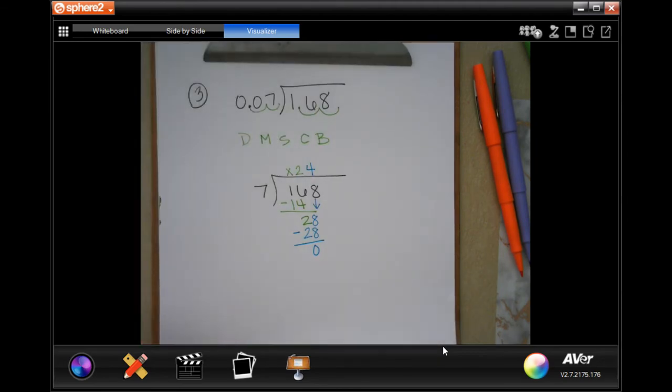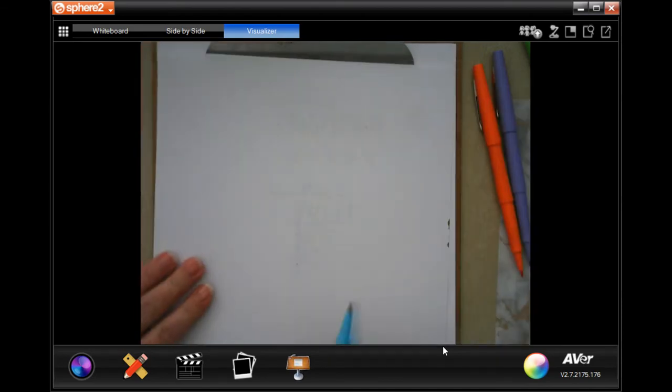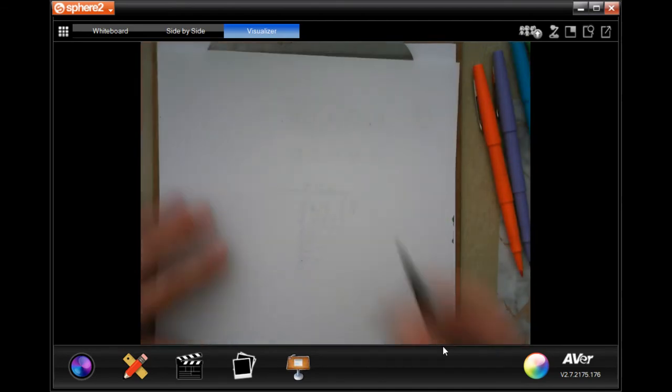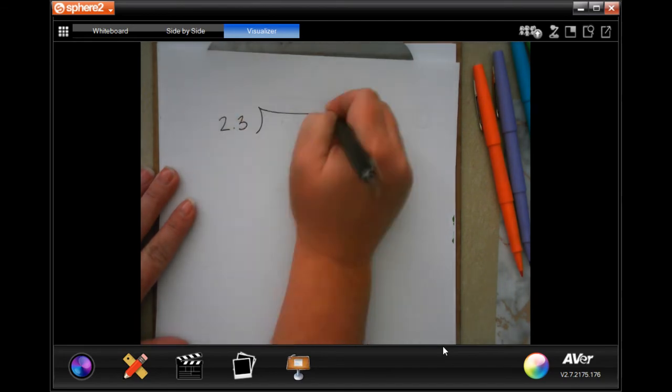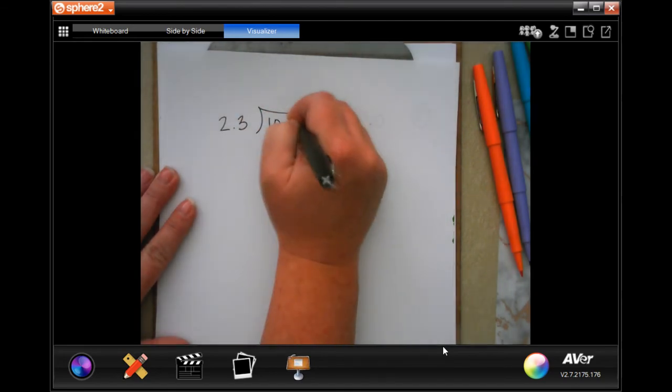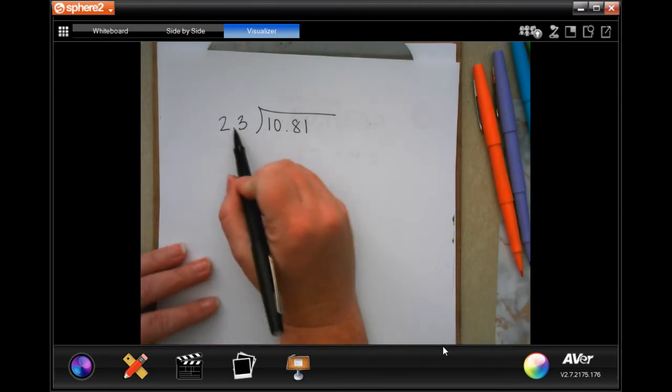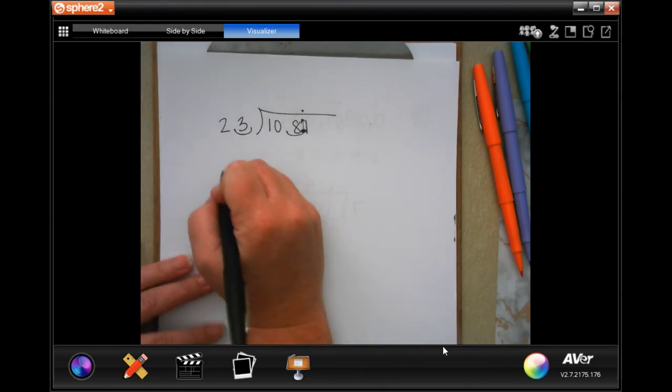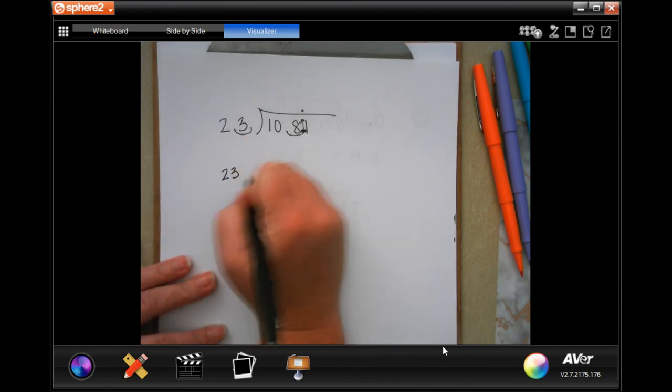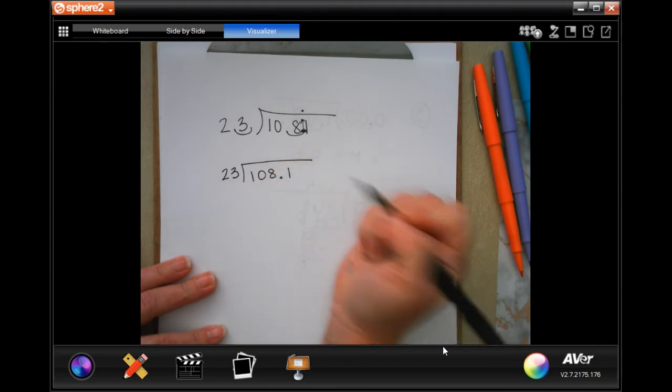So I'm going to go ahead and get started because I want you guys to see that you're not always going to have the amount of decimals outside that you would be inside. So this is 2.3 into 10.81. So you will see that out here, you only have to move that decimal one time, which means you only have to move this decimal one time, then bring it up. That's all I wanted to show you. So now you have 23 into 108.1.